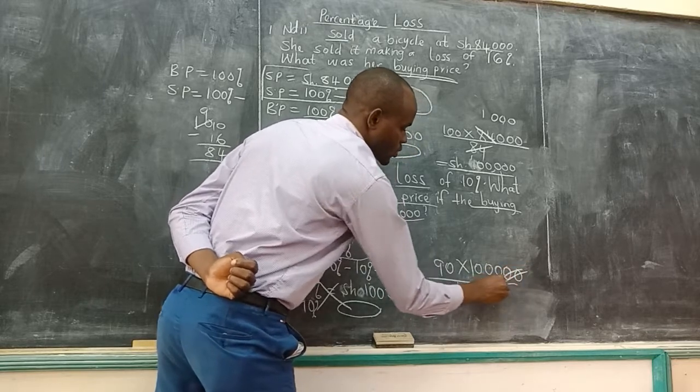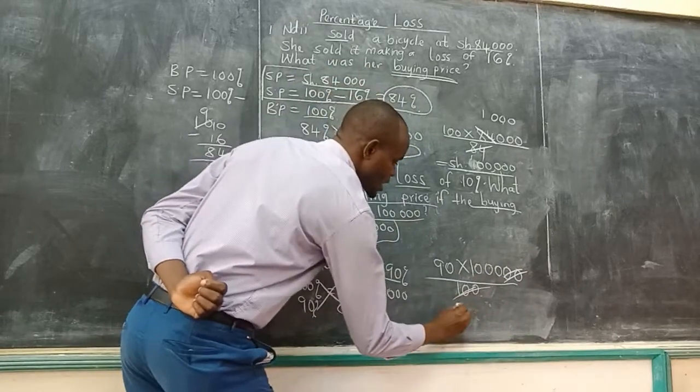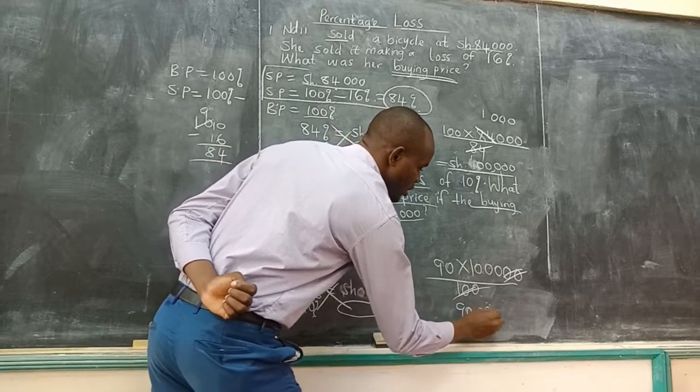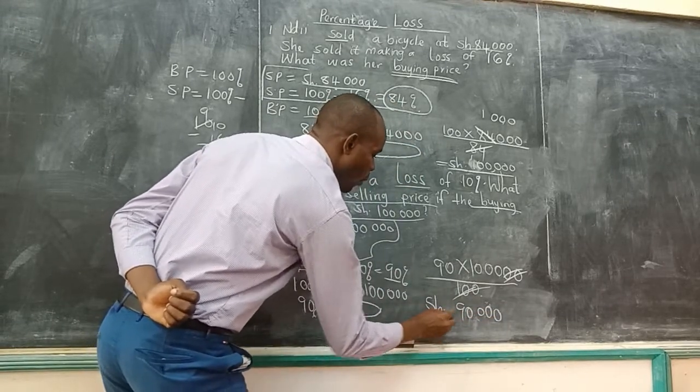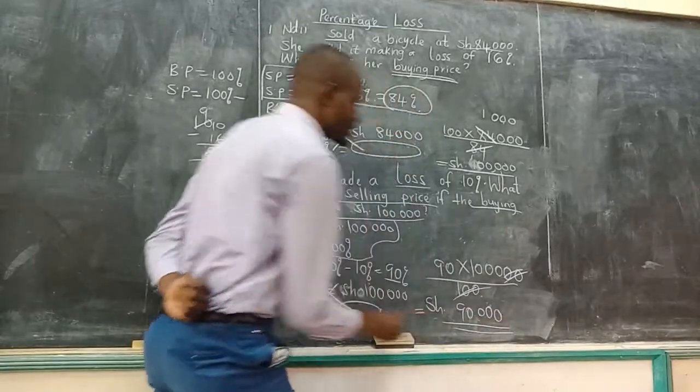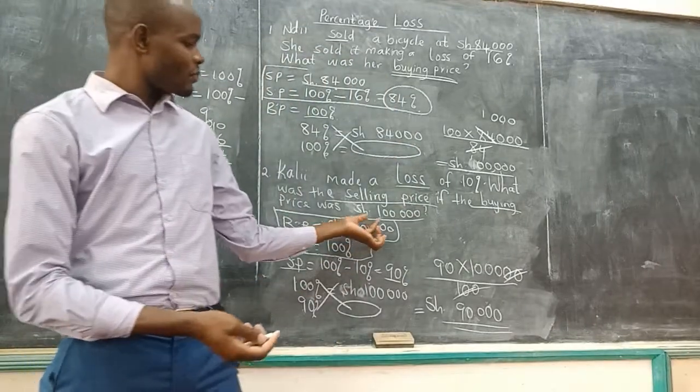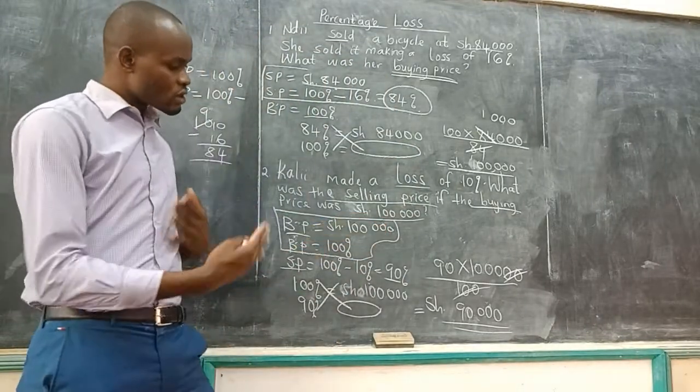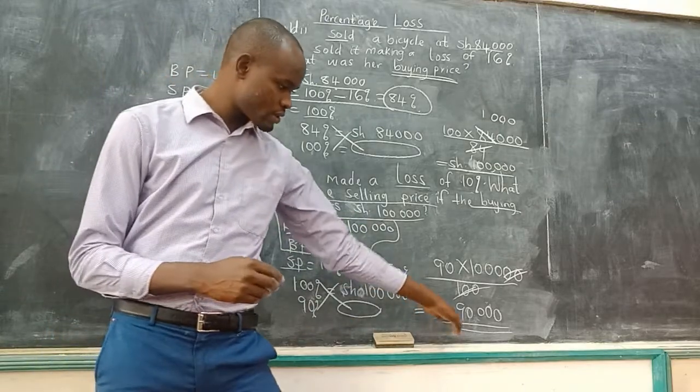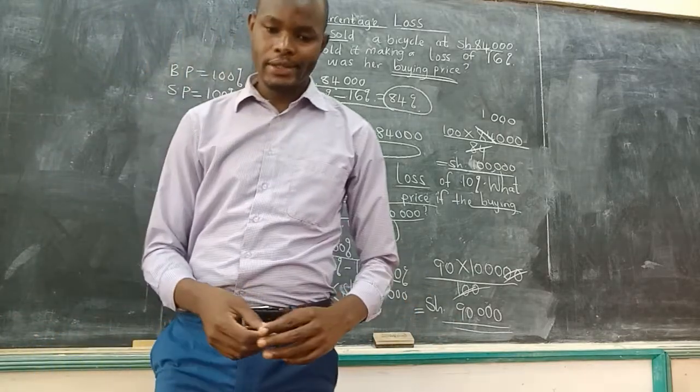Two zeros, we will cancel the two zeros. So the answer becomes 90,000. That is our selling price, 90,000. You can see the buying price was 100,000. This person sold less which is 90,000 to make a loss.